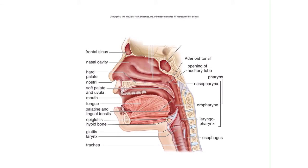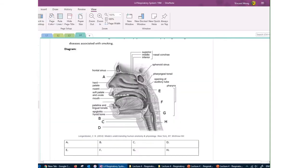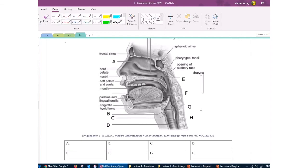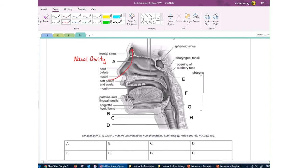Here we have a mid-sagittal section of the head. Looking at the study guide diagram for lecture four: A is the nasal cavity, which filters, warms, and moistens the air. You can see the frontal sinus — when you breathe air in, some goes into the frontal sinus, gets warmed and moistened, then continues forward. There's also a sphenoid sinus, and a total of four pairs of sinuses. The nasal cavity is separated from the mouth by two bones forming the hard palate.